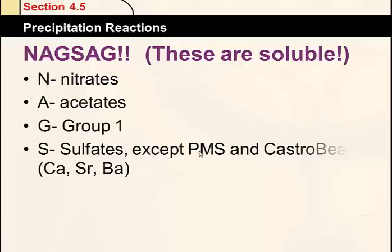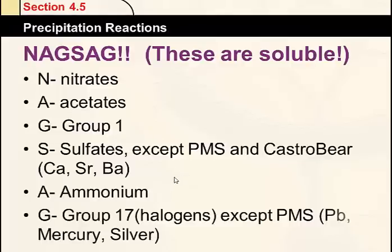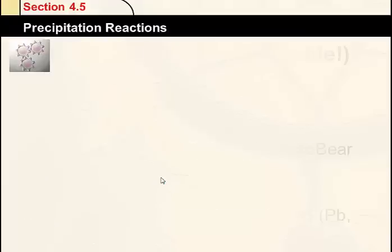S is for sulfates: sulfates are generally soluble except for PMS and calcium and strontium. PMS would be lead, mercury, and silver. So lead sulfate, calcium sulfate, and strontium sulfate are not soluble. E is for ammonium — always soluble. G is for Group 17 halogens: all chlorides, iodides, or bromides are soluble unless combined with lead, mercury, or silver. So which ion would form a soluble compound with lead? Sulfides — no. Chlorides — no, lead is PMS. Nitrates — yes, all nitrates are soluble, so that's our answer.